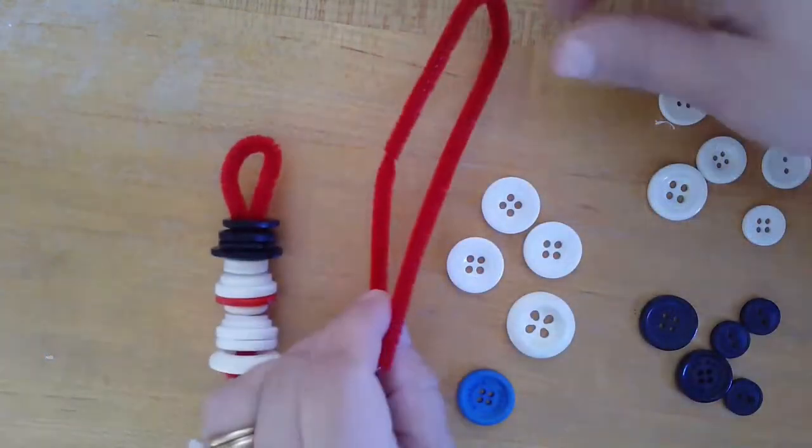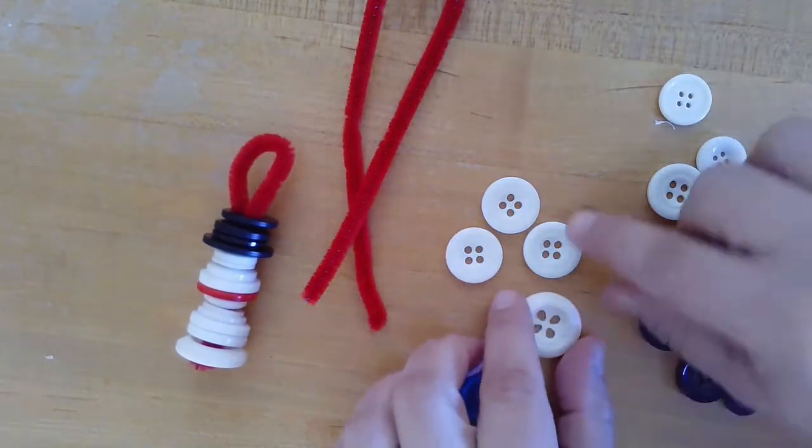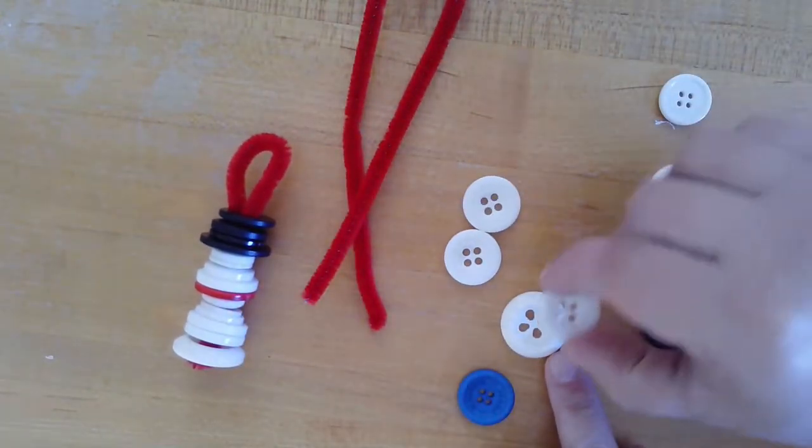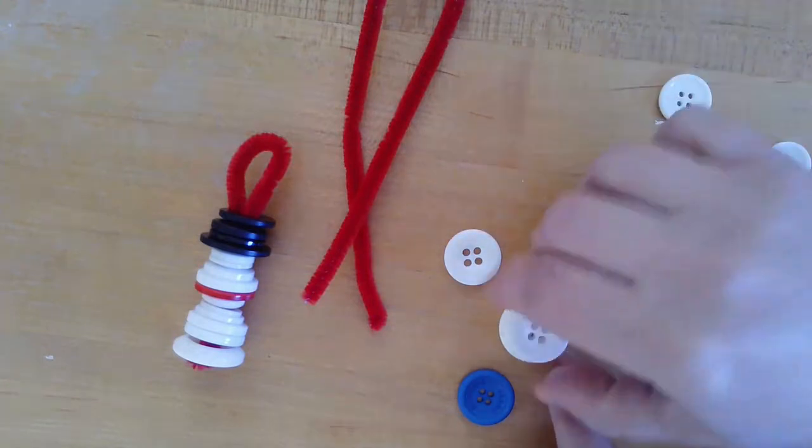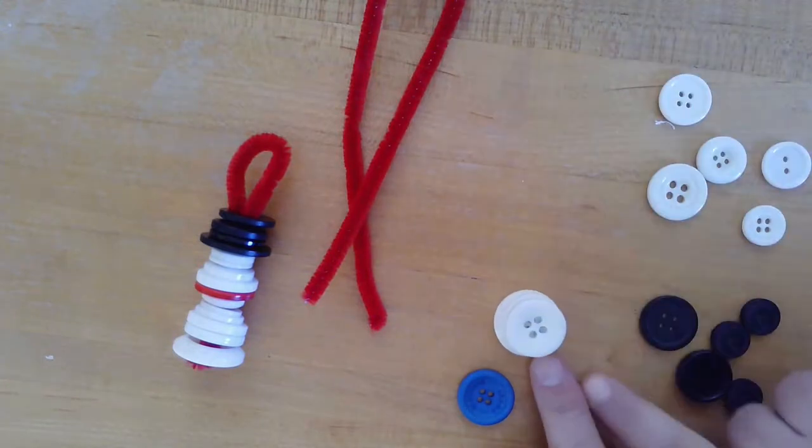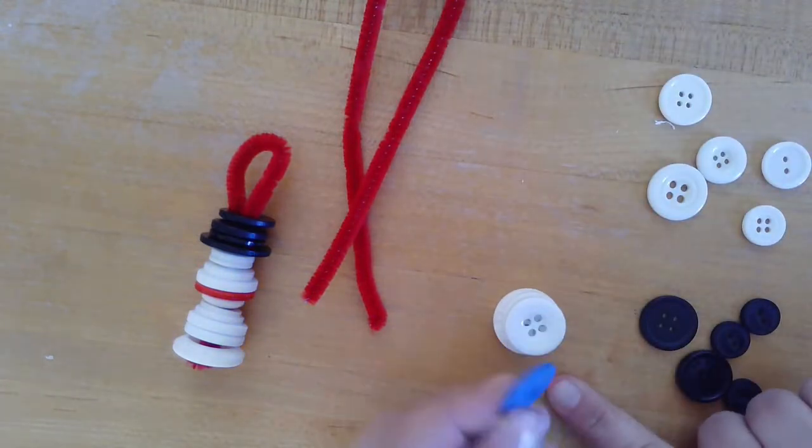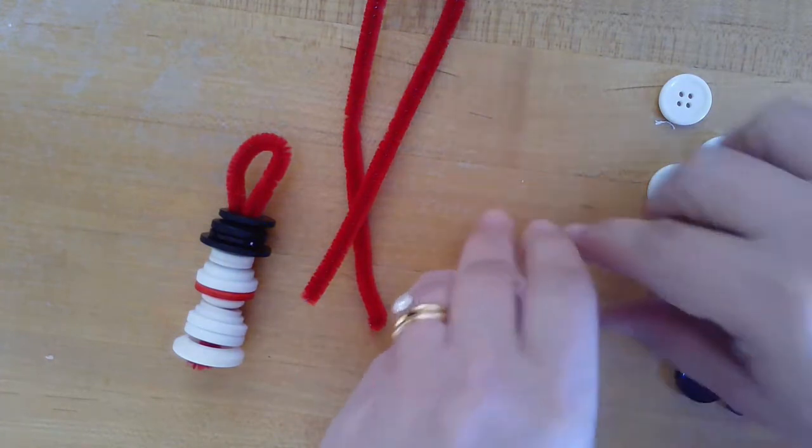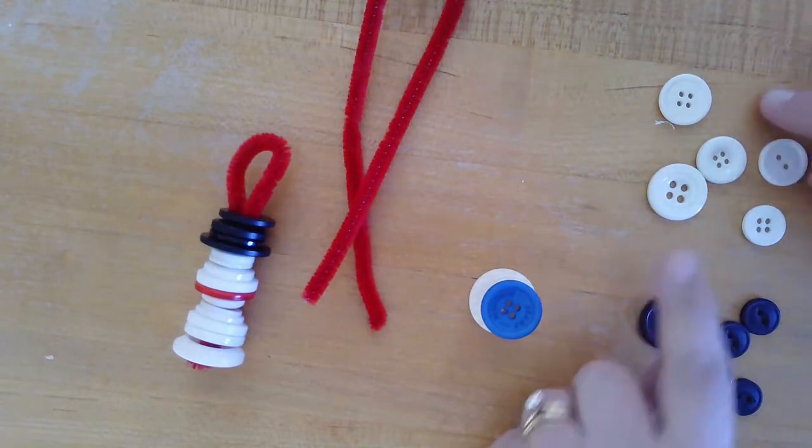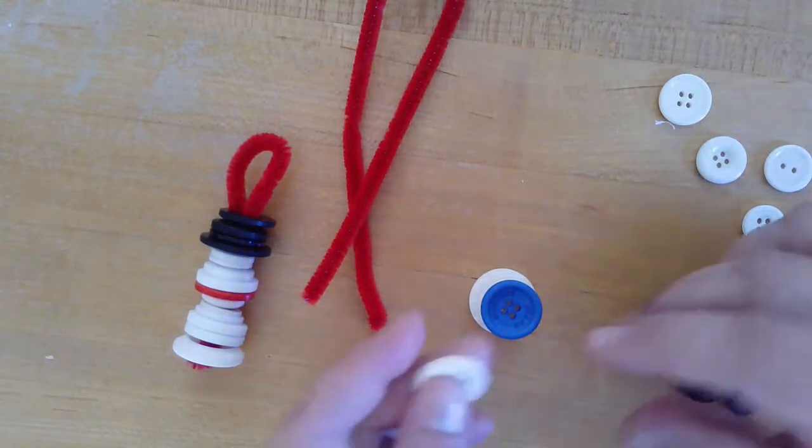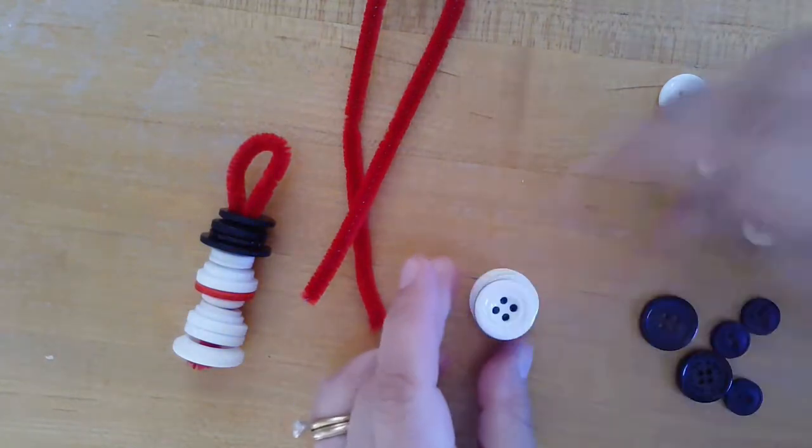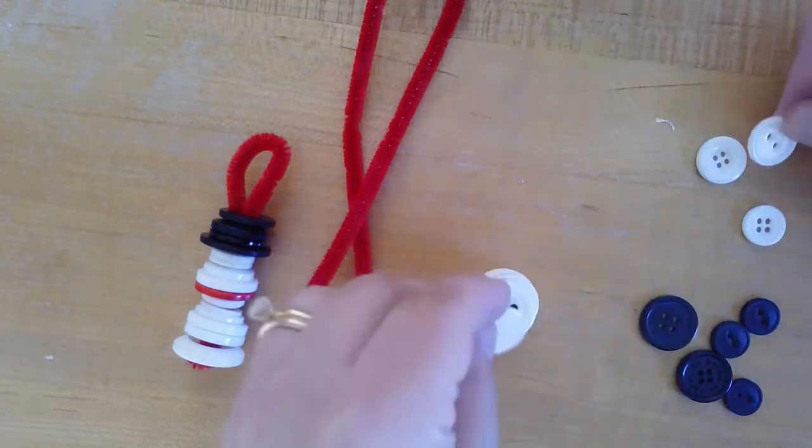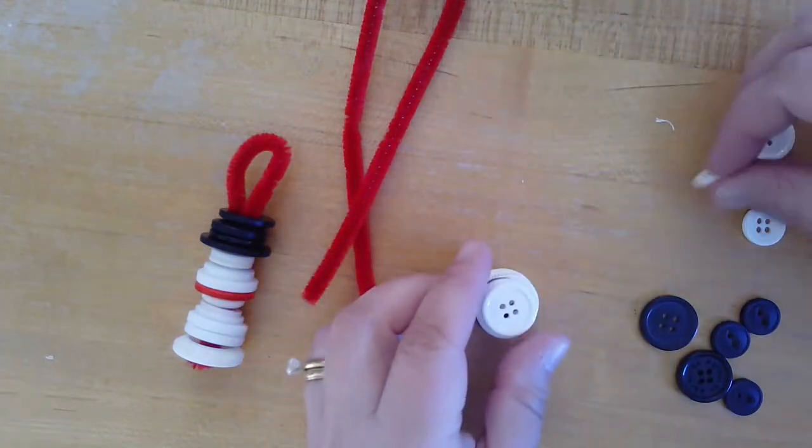To assemble your snowman, start by deciding what order you want your buttons to go in. I usually pick four or five of the largest as my base and stack them. You'll want to stack them to see how they look before you thread them. Then I'll put my scarf, which is blue, then start with the next largest and work my way down in size for the head.